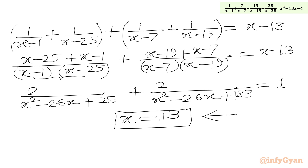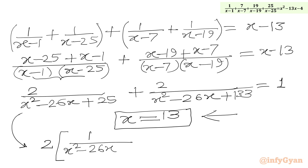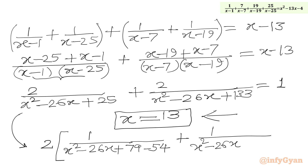We can take 2 common from the numerator of the LHS. So we write 2 times: 1 over (x squared minus 26x plus 25) plus 1 over (x squared minus 26x plus 133). We note that 25 equals 79 minus 54 and 133 equals 79 plus 54, giving us the structure A minus B and A plus B in the denominators.